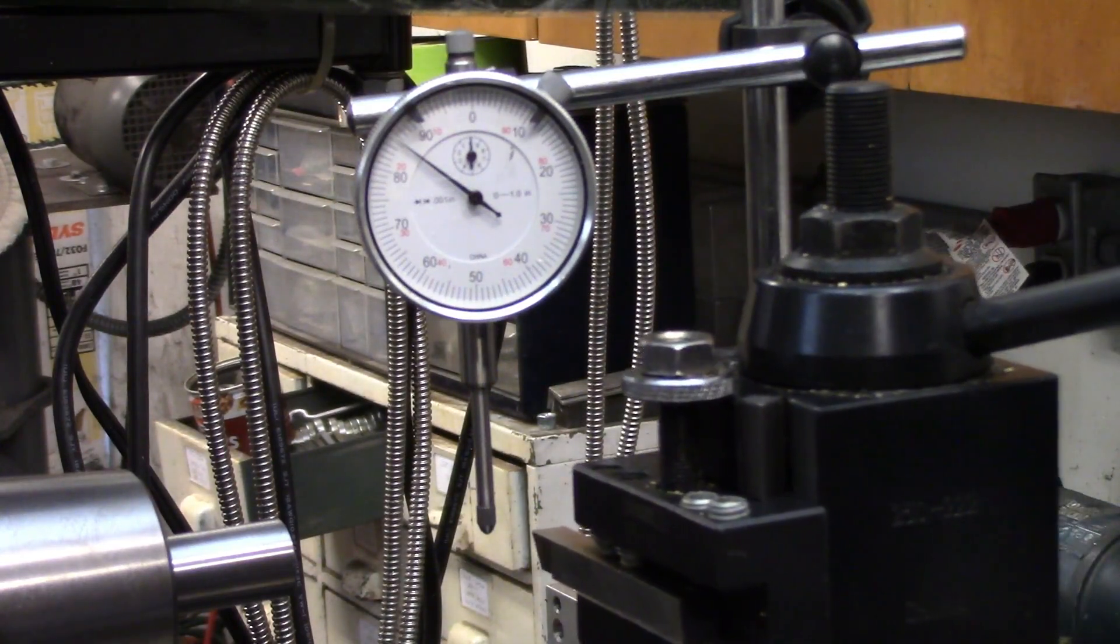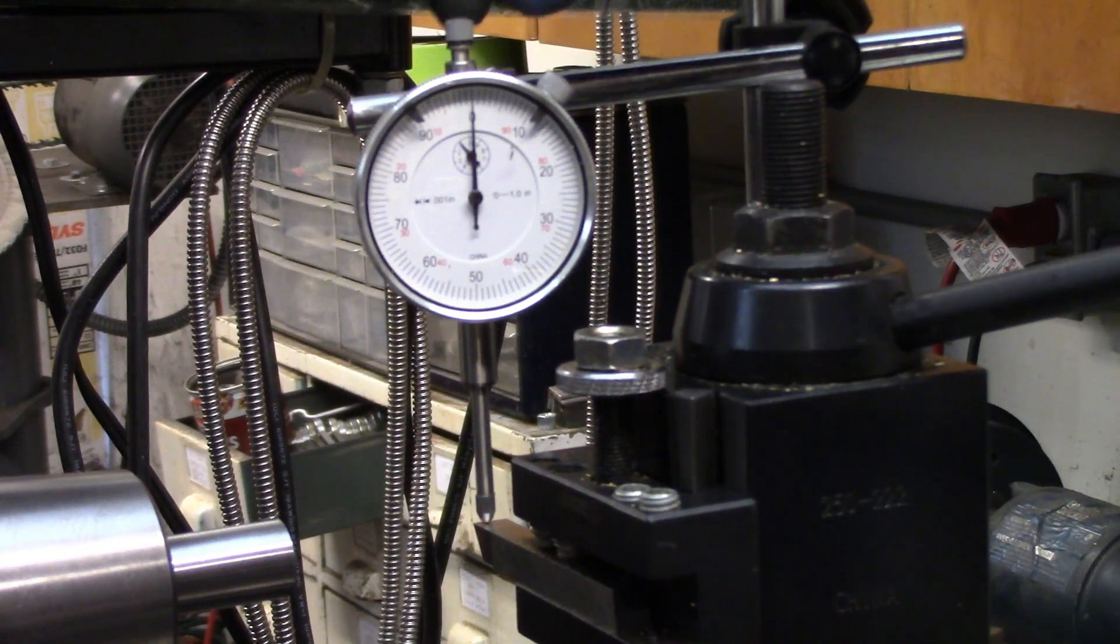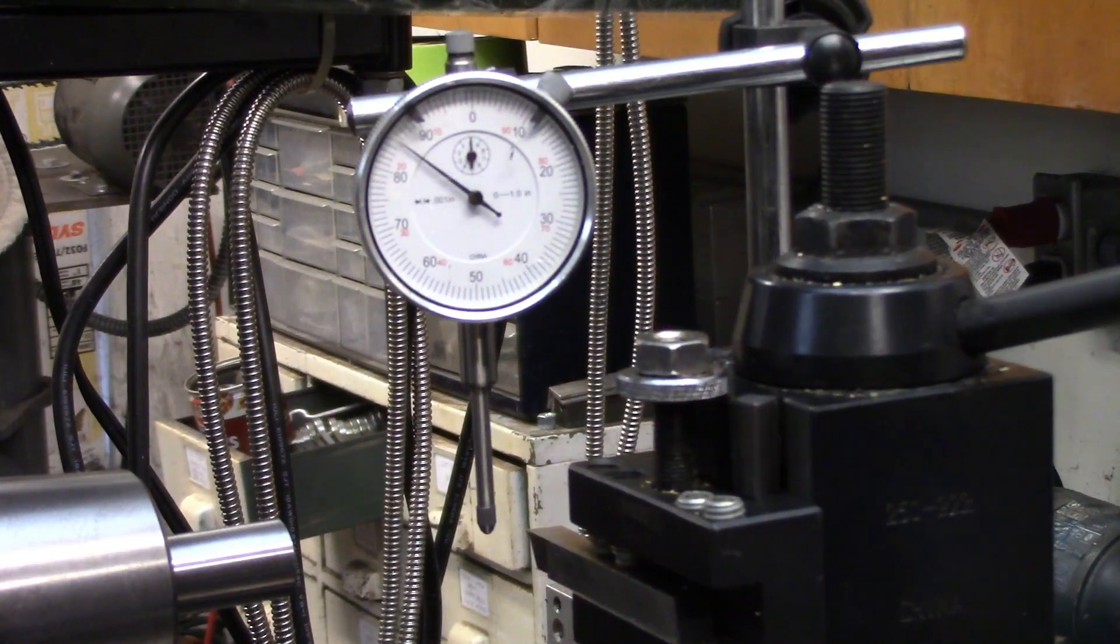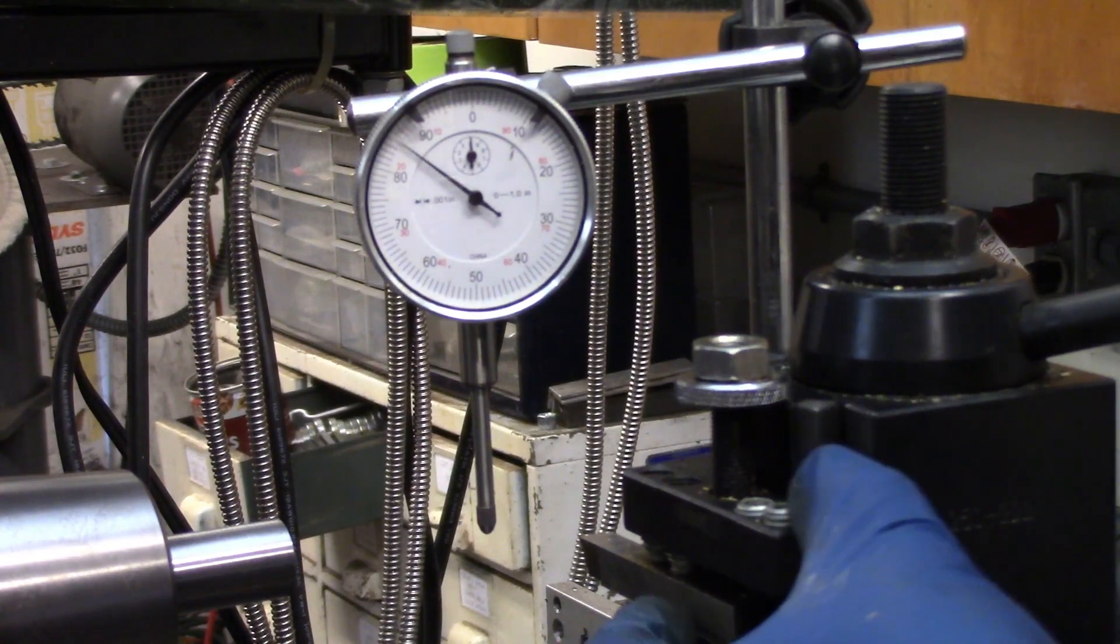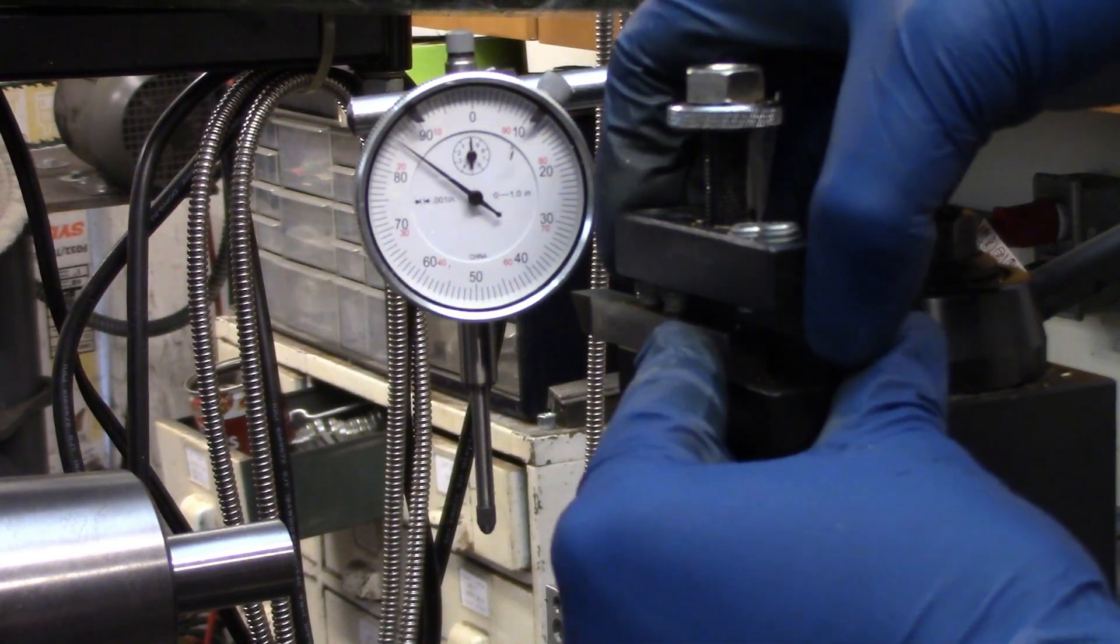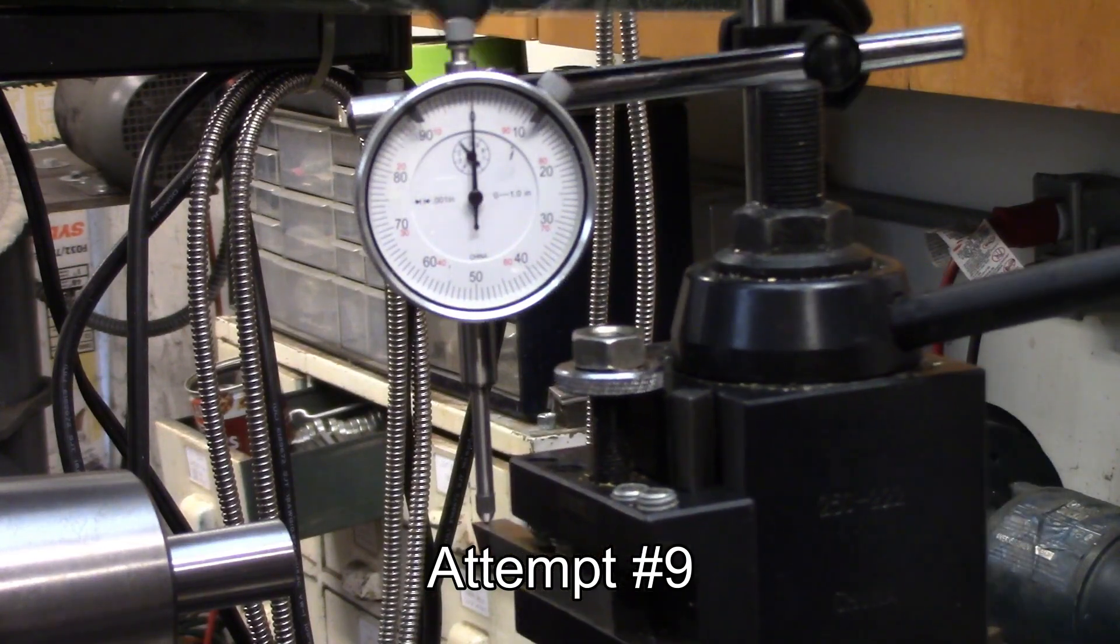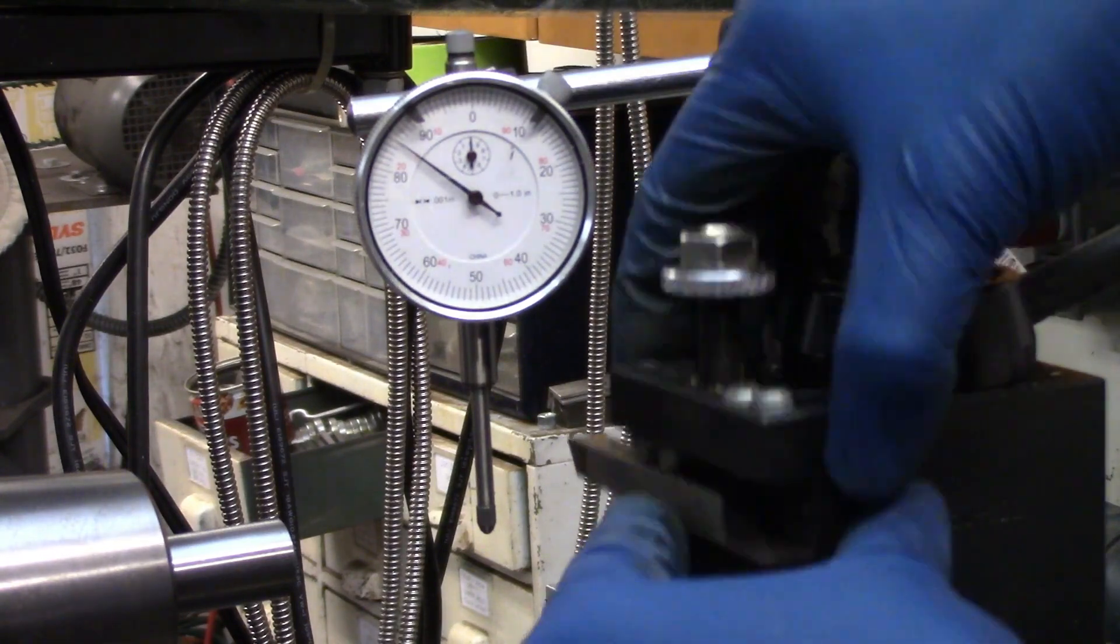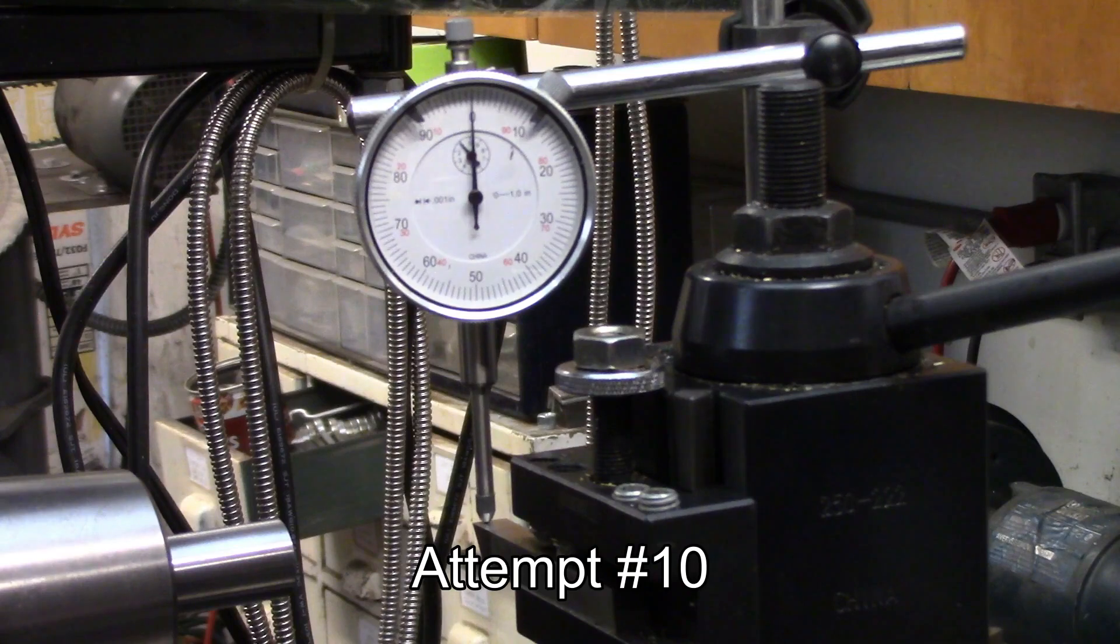Here comes attempt number eight, right on zero, maybe a tenth low. Just guesstimating on that. Like I said, this is a thousandths indicator, and you can pretty easily divide that space up between marks with your eye. Here's number nine. A smidge low, maybe two tenths, yeah, about two tenths low.